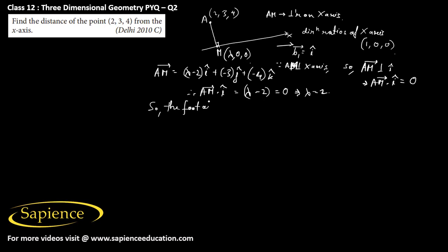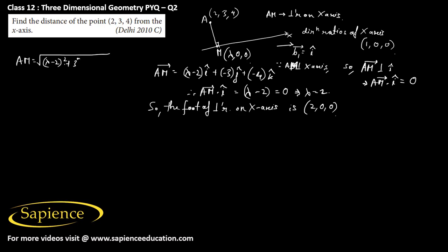The foot of the perpendicular drawn from the given point on the x-axis is (2, 0, 0). We have to find the length AM, which is the square root of (λ − 2)² + 3² + 4². Since λ = 2, this gives 0 + 9 + 16, so AM equals 5 units. This is the final answer.